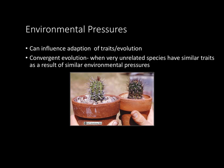Environmental pressures can influence the adaptation of traits and evolution. Convergent evolution is when very unrelated species have similar traits as a result of similar environmental pressures. For example, these two cactuses live in very different parts of the world, but because their environments are similar, they end up looking very alike.